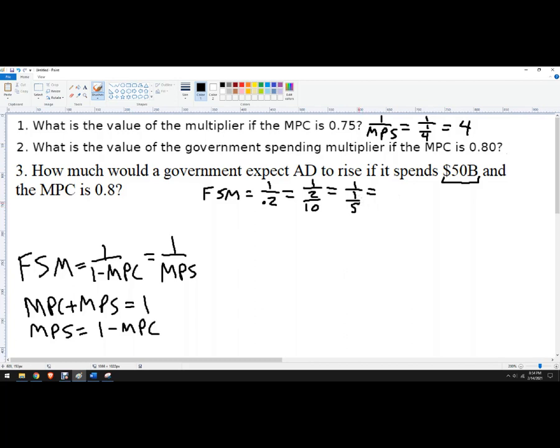Multiply the numerator by 5, and I get 5, because the denominator will cancel out. So fiscal spending multiplier is 5.